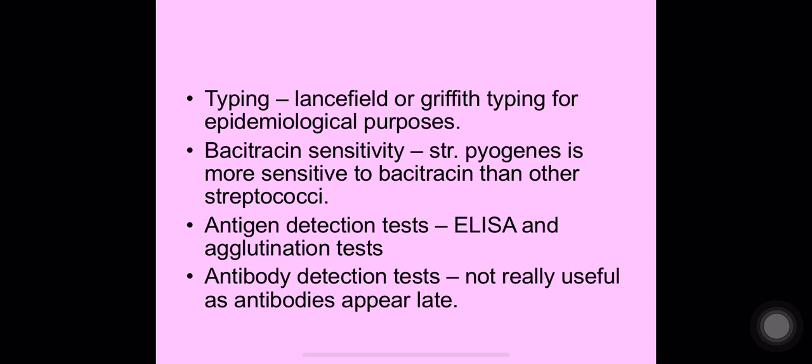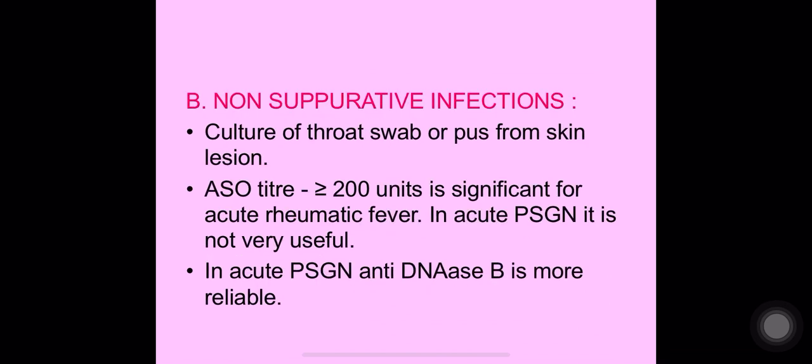Bacitracin sensitivity is a feature of Streptococcus pyogenes and can be used as a diagnostic test. Detection tests like ELISA and agglutination tests can also be used. Antibody detection tests are not very useful as antibodies appear late. For non-suppurative infections, throat swab or pus from skin lesion is cultured. An ASO titer greater than or equal to 200 units is significant for acute rheumatic fever, but is not very useful for acute post-streptococcal glomerulonephritis.